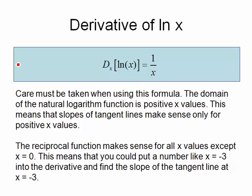Now you need to be real careful when using this formula. And the reason for that is that the domain of the natural logarithm function that I'm taking the derivative of here is positive x values. That means that if I'm trying to find the slopes of tangent lines, this only makes sense for positive x values.